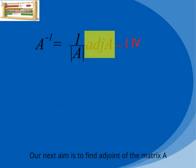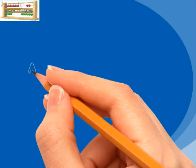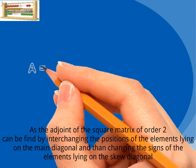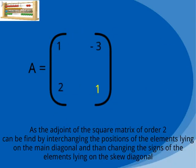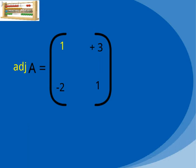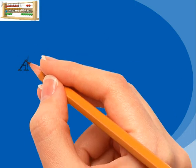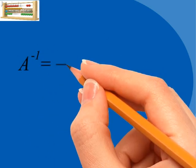Our next aim is to find the adjoint of matrix A. The adjoint of a 2×2 square matrix is found by interchanging the positions of the elements on the main diagonal and changing the signs of the elements on the skewed diagonal. Thence, the inverse of matrix A is obtained.